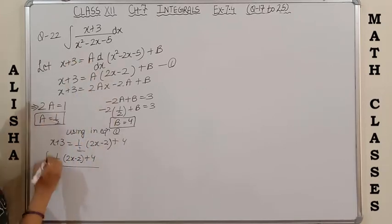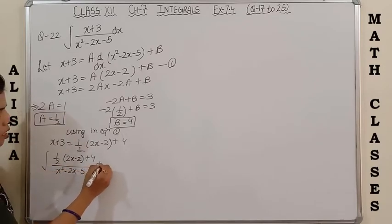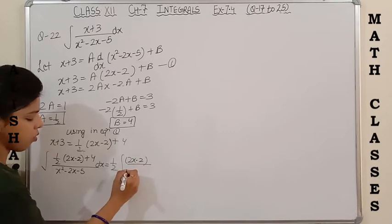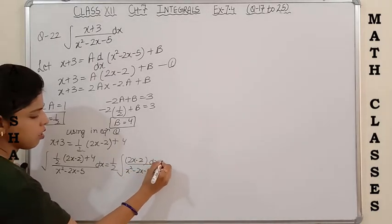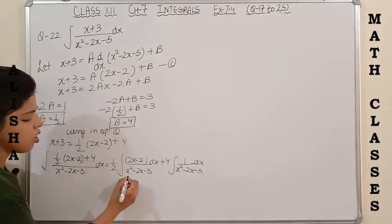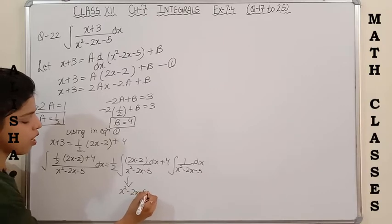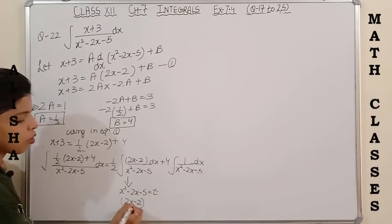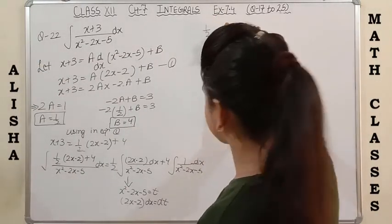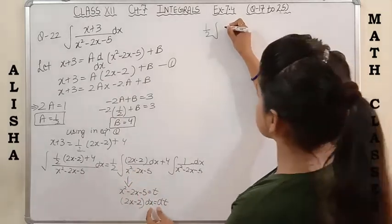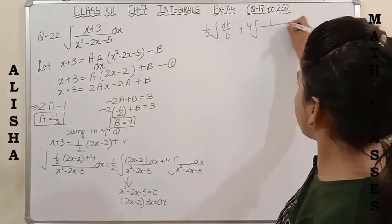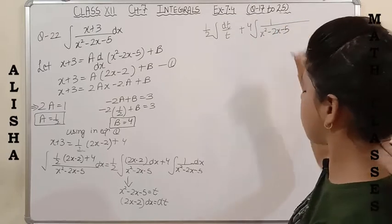Using this value in the given equation, I get the integration of [(1/2)(2x-2) + 4] upon (x²-2x-5) dx. Now splitting this integral into two parts: the first part is of the form f'(x)/f(x) as we do in every question, and the second integral is 4 times 1 upon (x²-2x-5) dx. For the first part, let x²-2x-5 = t, so (2x-2)dx = dt.